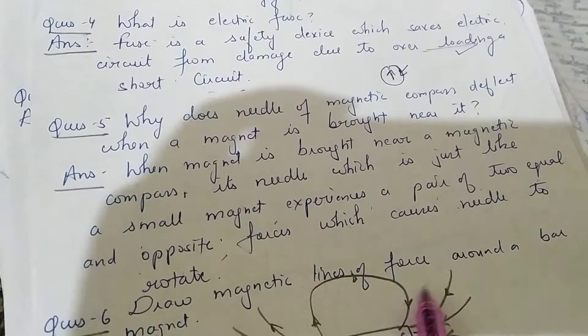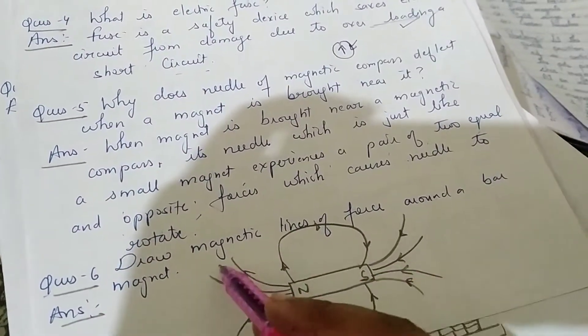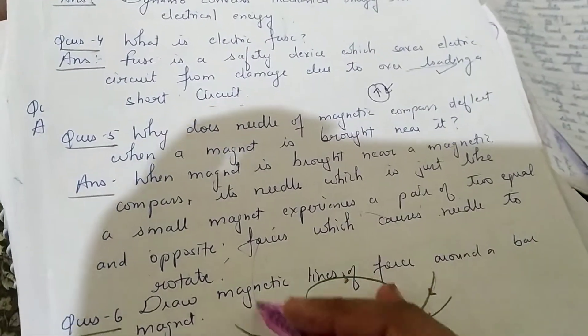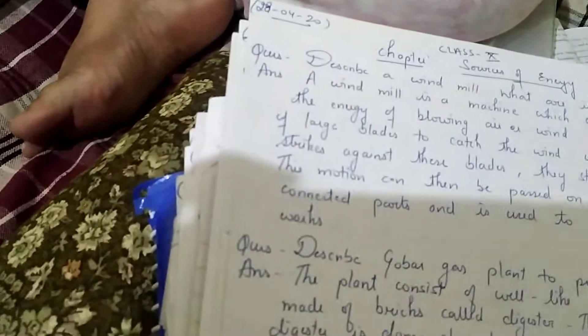Draw magnetic lines of force around a bar magnet. The magnetic lines are drawn from north pole entering and coming out from the sides in semi-circles.